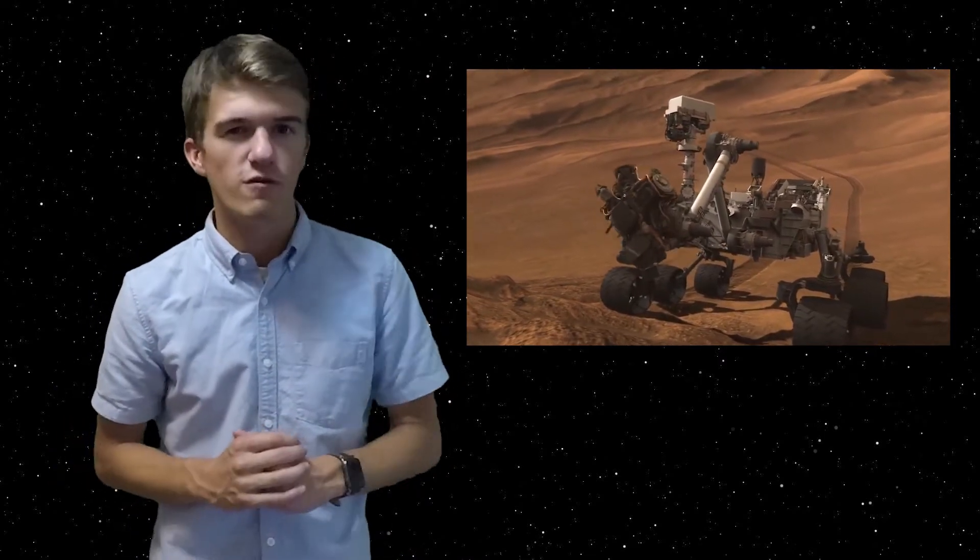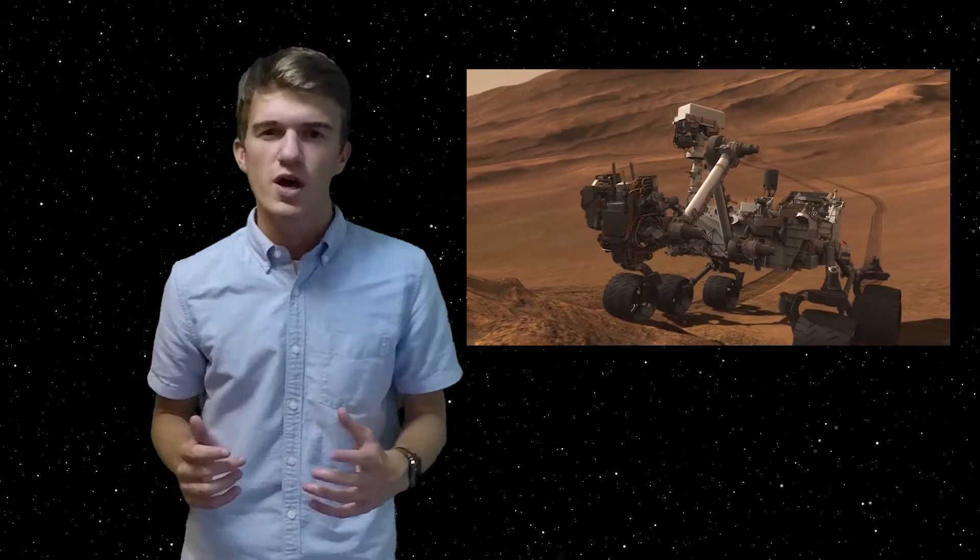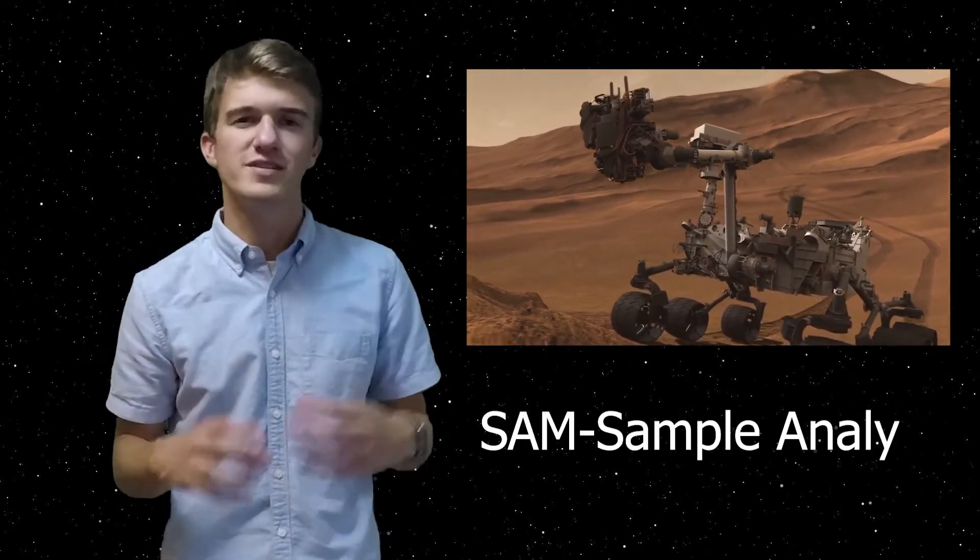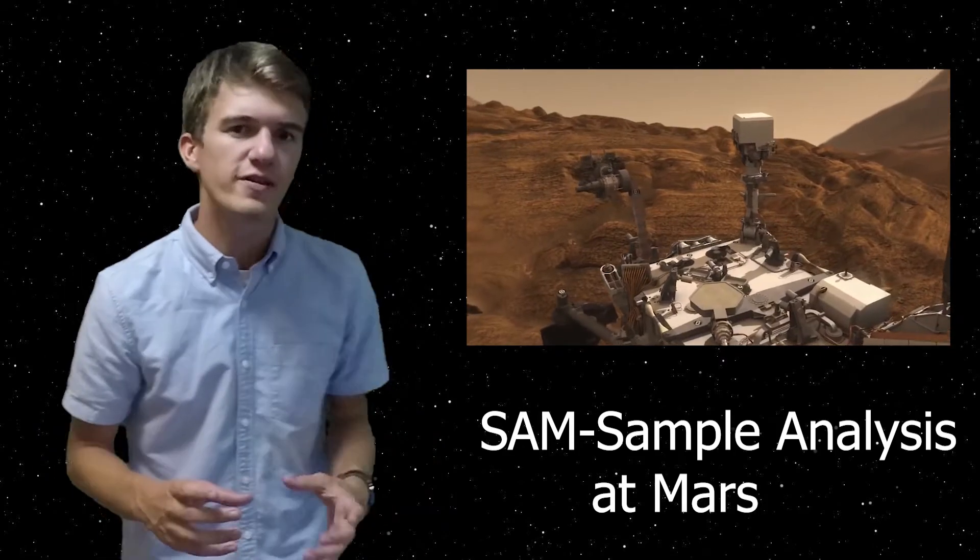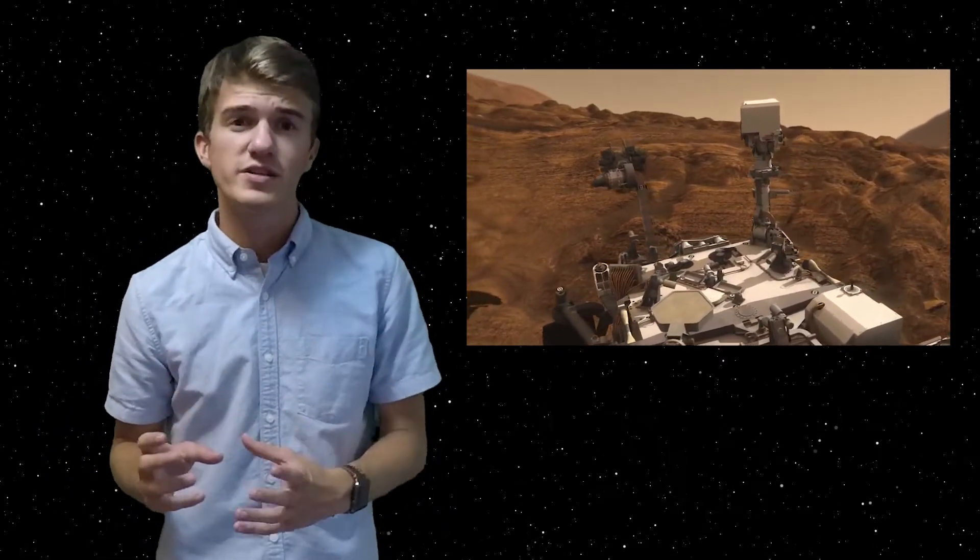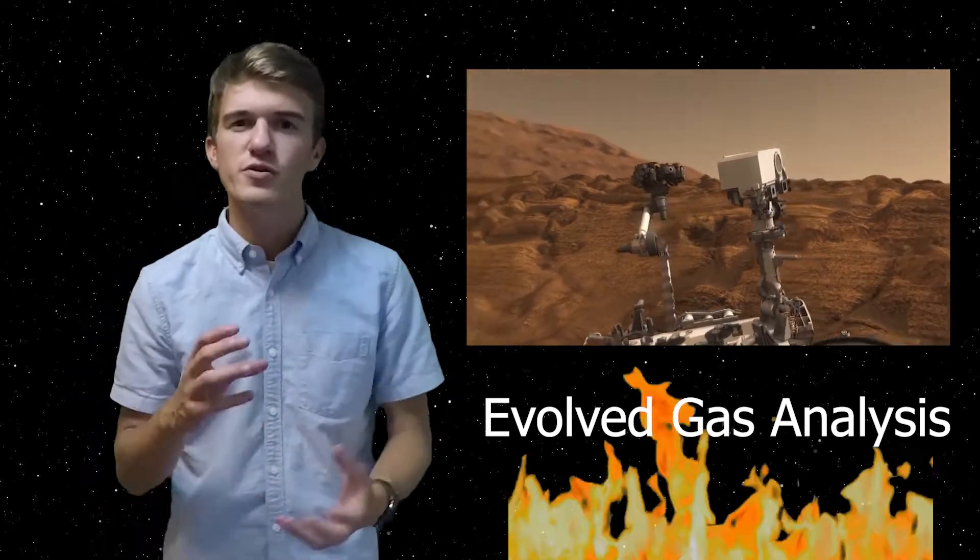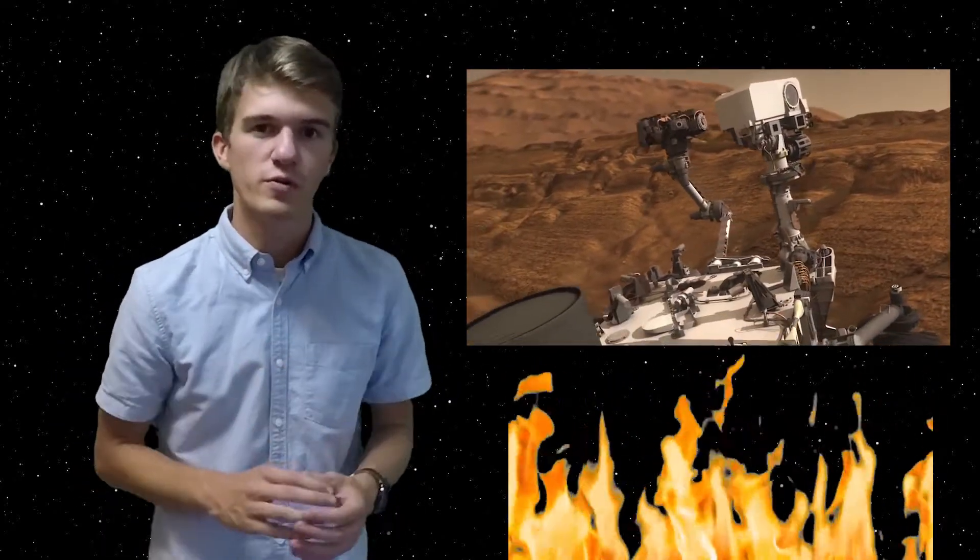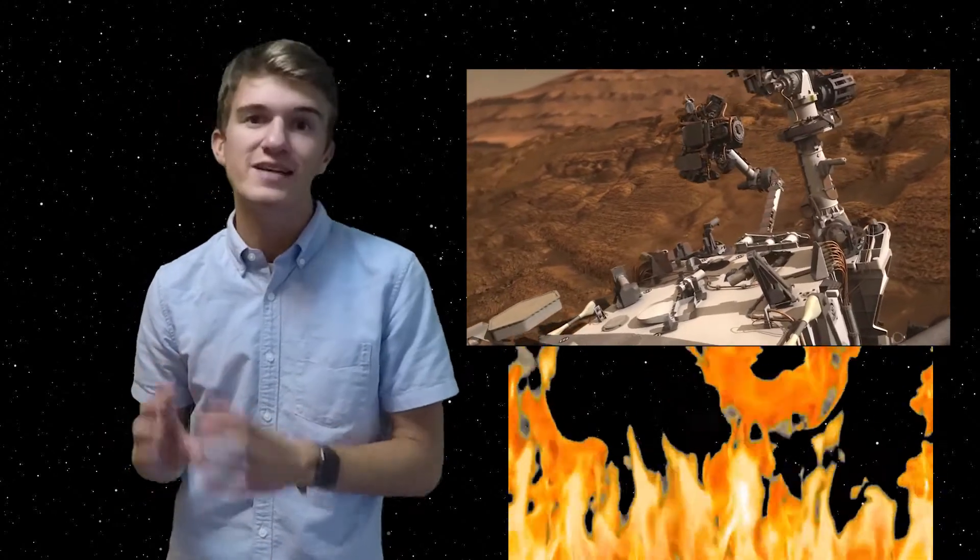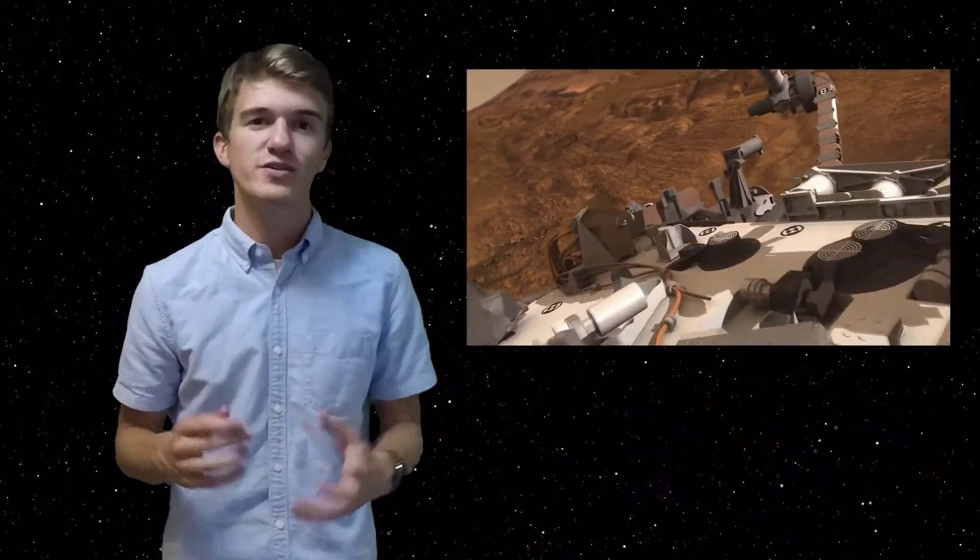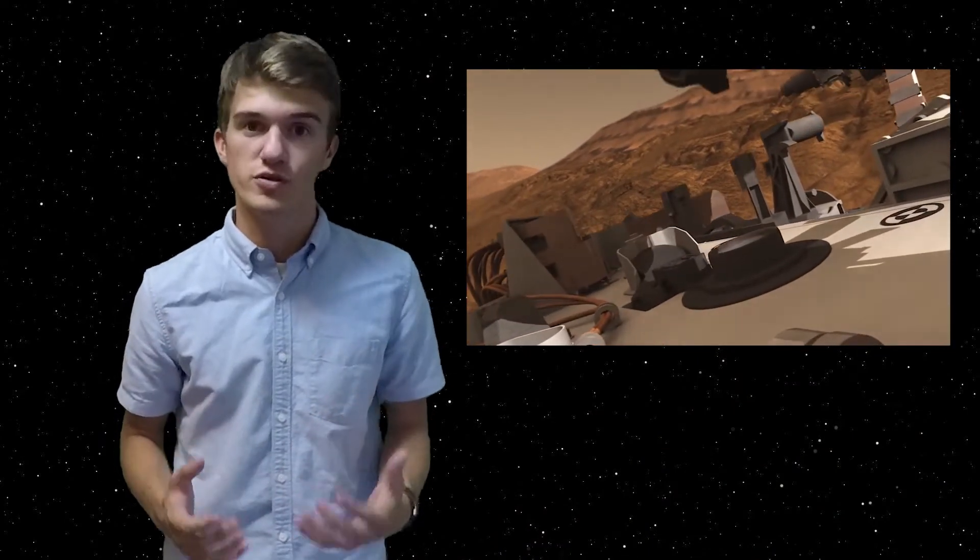So how exactly did the Curiosity rover make this discovery on Mars? Well, it turns out it used an instrument called SAM, or the Sample Analysis at Mars. More specifically, it put these sediments through a process called Evolved Gas Analysis. By raising the temperatures, it turned it into a gaseous form, and by putting light rays through it, we could determine the chemical makeup of the gas that we had collected. And by doing so, we could work our way back to determine what exactly those molecules are.